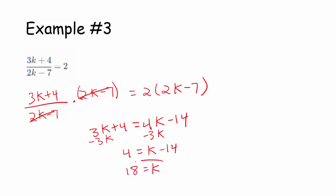And when I look back up here, I'm totally fine because, what value of k will make the left-hand side undefined? Well, if it's 2k minus 7, so k can't be 3.5. But I got 18 for an answer, so great.